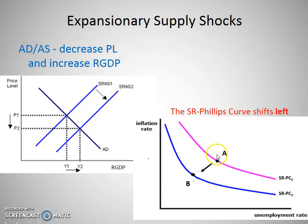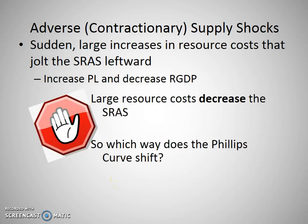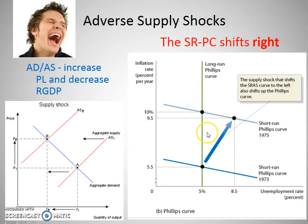If the SRAS increases, then the SRPC decreases — they go in opposite directions. The price level went down and unemployment went down, so a new point is formed and you draw a whole new SRPC to the left. The opposite is the contractionary or adverse supply shock, where there's a large increase in resource costs used by many goods, shifting the SRAS left. A shift left of the SRAS causes an increase in the price level and a decrease in output, which means a shift right of the SRPC.